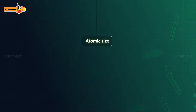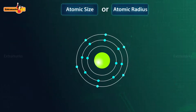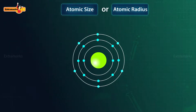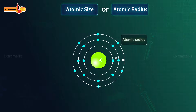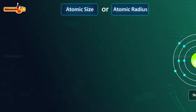Now, let us look at how atomic size — also known as atomic radius — changes along the group and across the period. Atomic size or atomic radius is the distance between the center of the nucleus and the outermost shell of the atom.